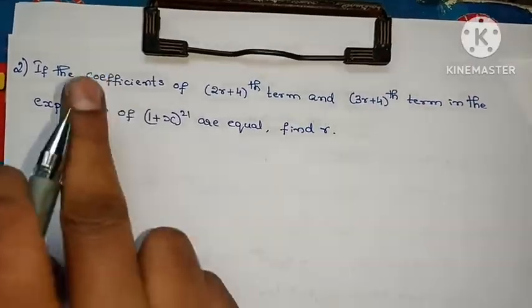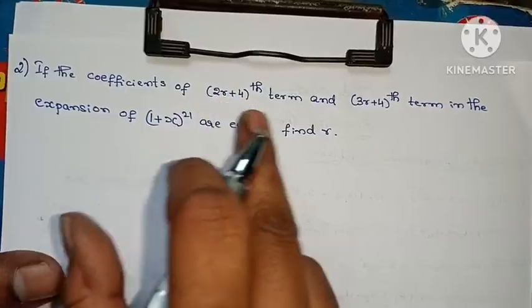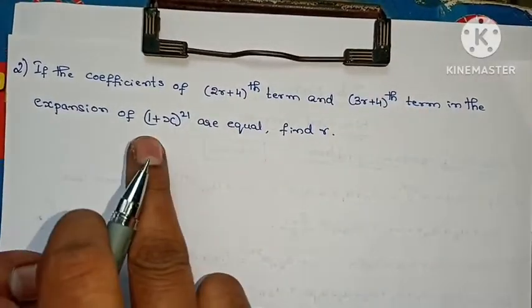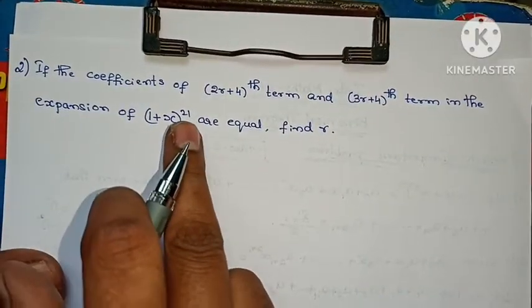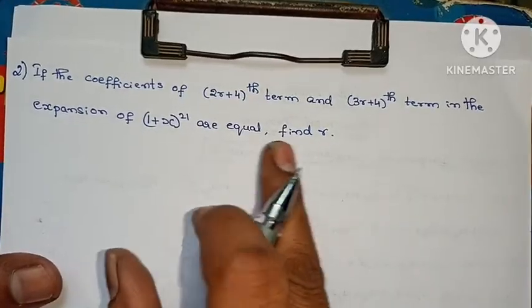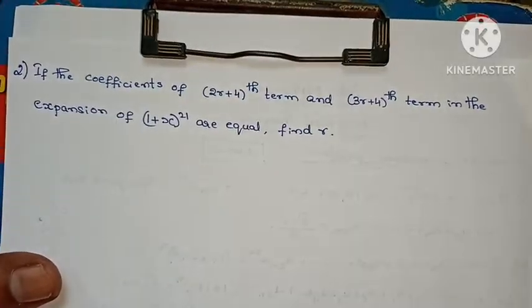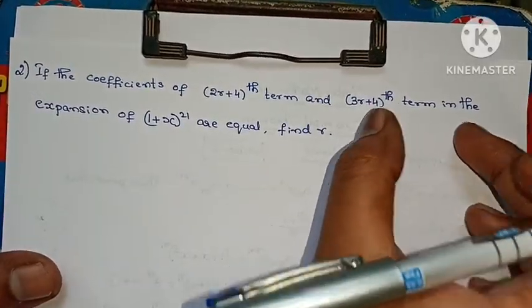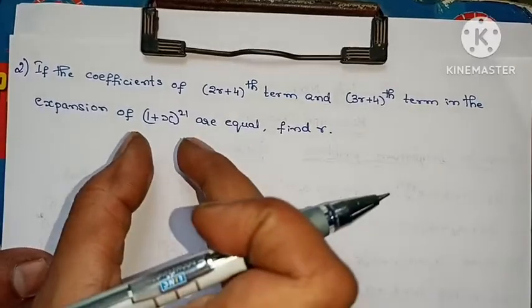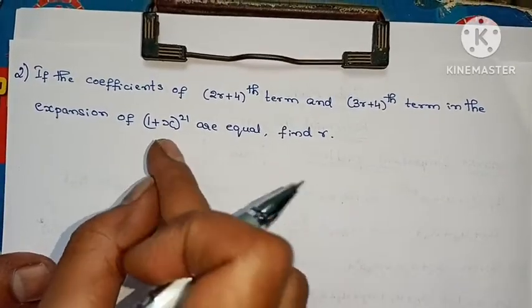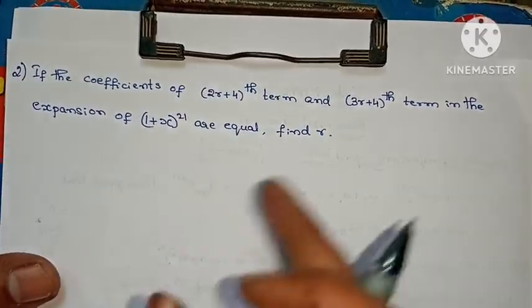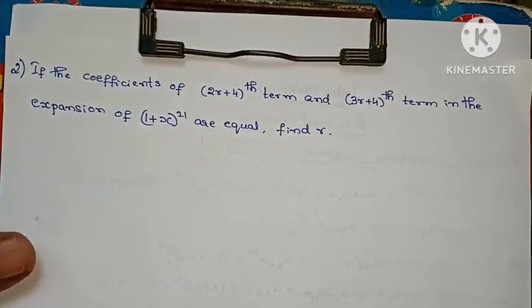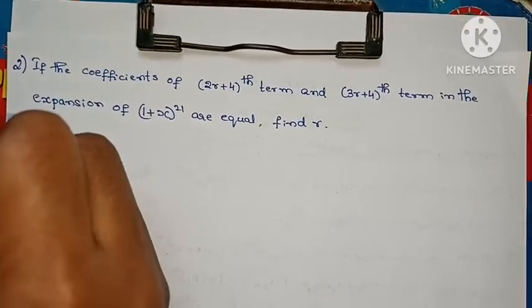Second problem: If the coefficients of the (2r+4)th term and the (3r+4)th term in the expansion of (1 + x)^21 are equal, find R.